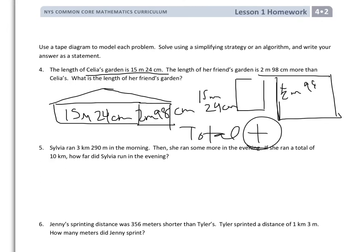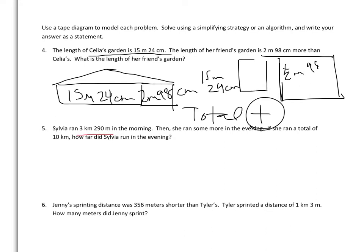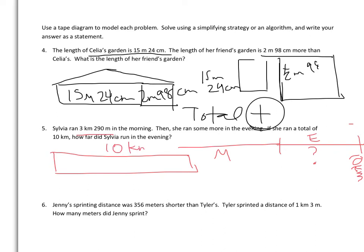For 5, it says, Sylvia ran 3 kilometers and 290 meters in the morning. So I'm going to draw that distance and call that her morning run. Then she ran some more in the evening. She ran a total of 10 kilometers. The question is, what is the distance she ran in the evening? So that's my visual picture. What that would look like as a tape diagram is we know the total, 10 kilometers. We know what she ran in the morning, 3 kilometers and 290 meters. So we're trying to find this missing amount. So to do that, we'd take the total, subtract the part we know, and that should find us our missing section.